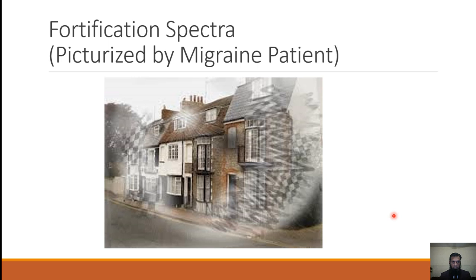This is a picture drawn by an actual migraine patient showing how they see the world during a visual aura. You can see the fortification spectra and the haziness of the visual fields — this is how the migraine patient perceives the world during a visual aura episode.